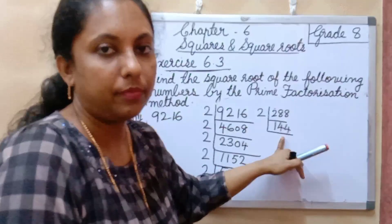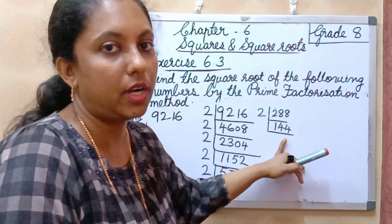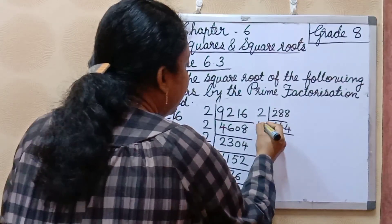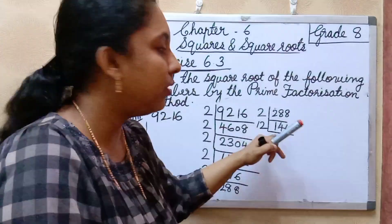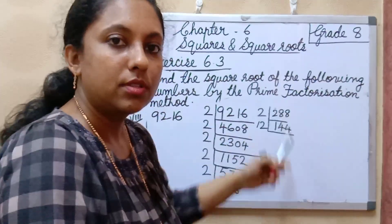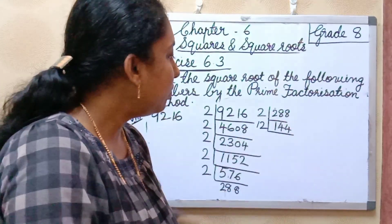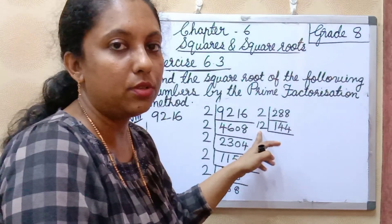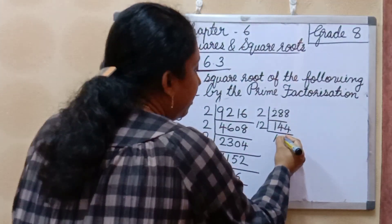That is a square number. 12 × 12 = 144. So directly we can divide with 12. Otherwise you will divide with 2 again, which is time consuming. So you can divide with 12 — 12 × 12 = 144.